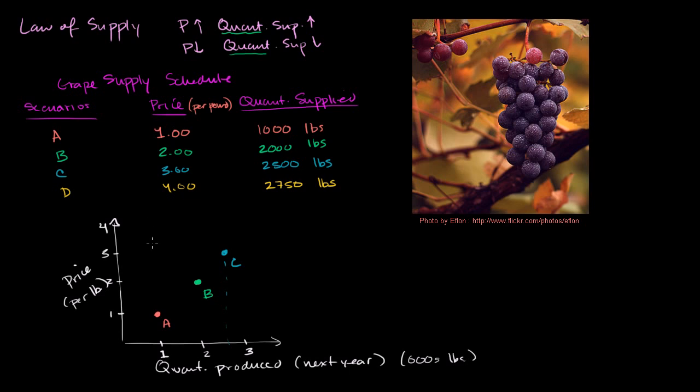And then scenario D, at $4, actually let me be a little bit clearer with that, because we're getting kind of close, so this is 2,500 pounds gets us right over here, this is scenario C, and then scenario D, at $4, 2,750, so 2,750 is like right over there, so that is $4, that is scenario D.